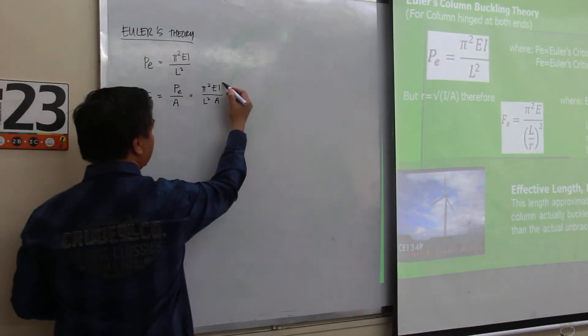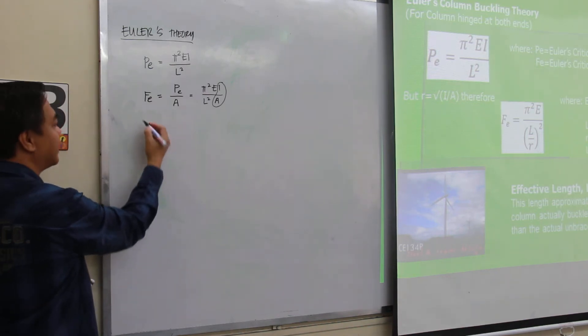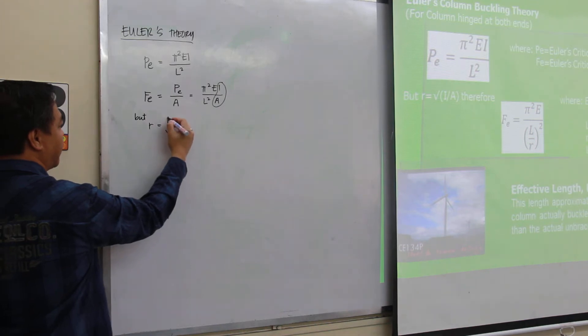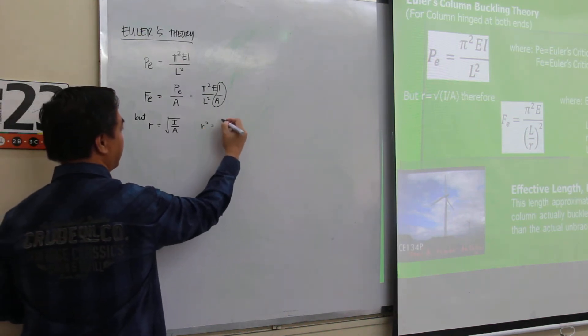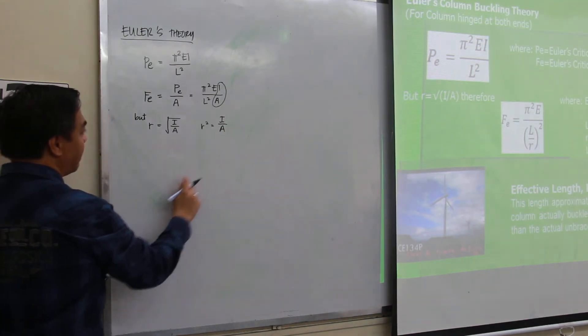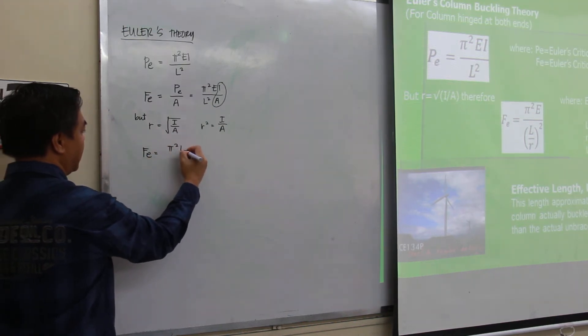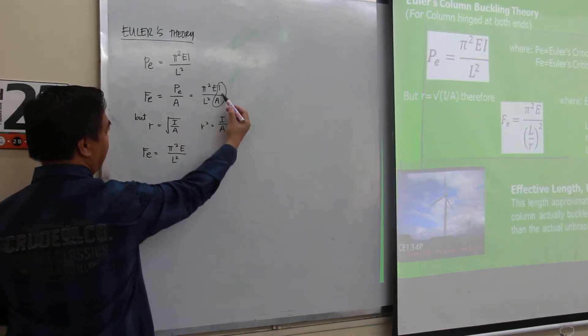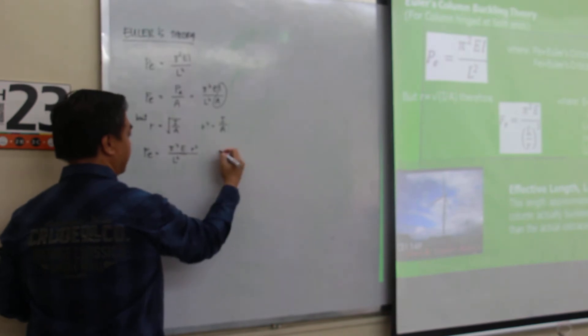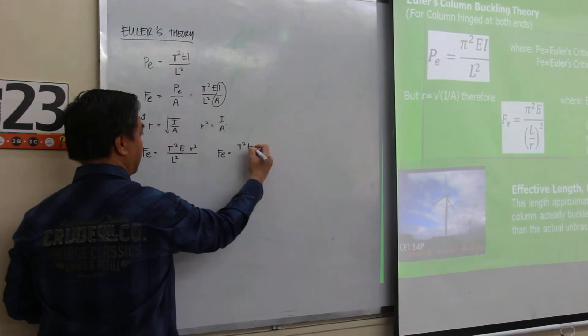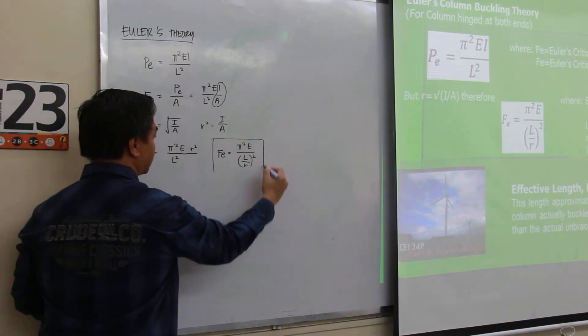Now, what is this I over A? As I have told you before, the most important property for a compression member is the radius of gyration. The radius of gyration is defined as the square root of I divided by area. So this would be written as r squared is equal to I over A. So if I would be replacing this I over A with this r squared, my Euler's critical stress will be pi squared E over L squared, and this I over A will be replaced with r squared. So furthermore, this would be written as Euler's critical stress equals pi squared E divided by L divided by r, both of them are squared. So this would be our Euler's critical stress.